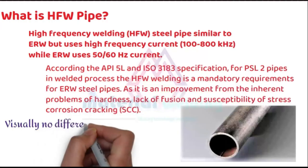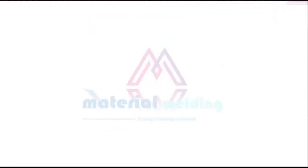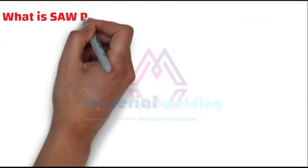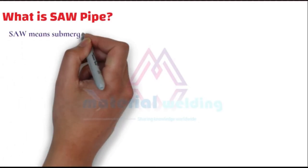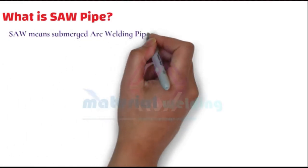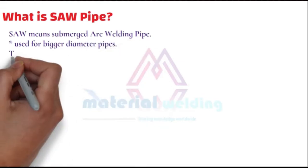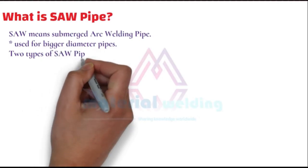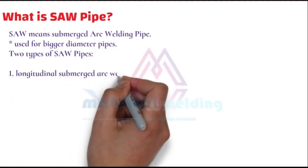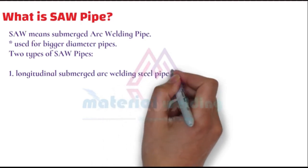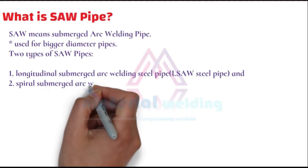Visually, both ERW and HFW pipes look similar. Next is submerged arc welded pipes. They are having two types: longitudinal submerged arc welded pipe, also called LSAW pipe, and spiral submerged arc welded pipe, also called SSAW pipe.